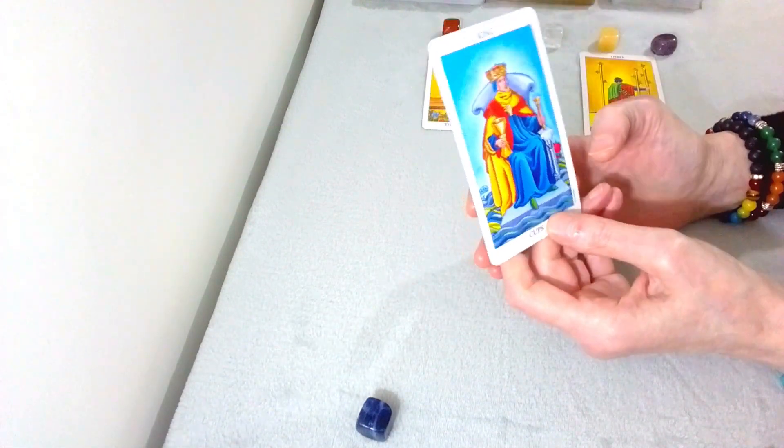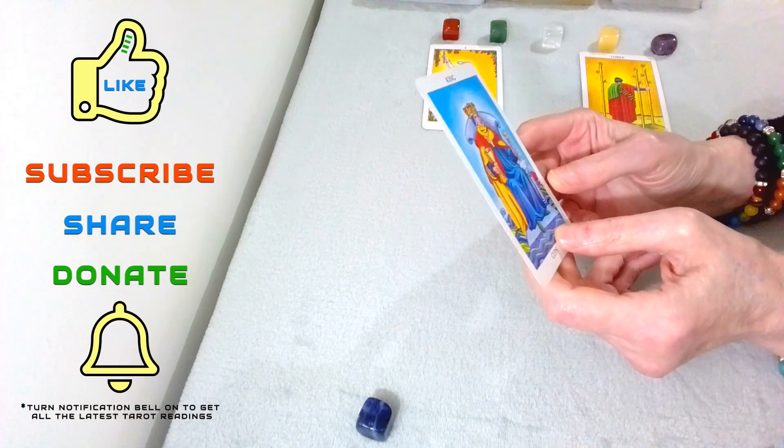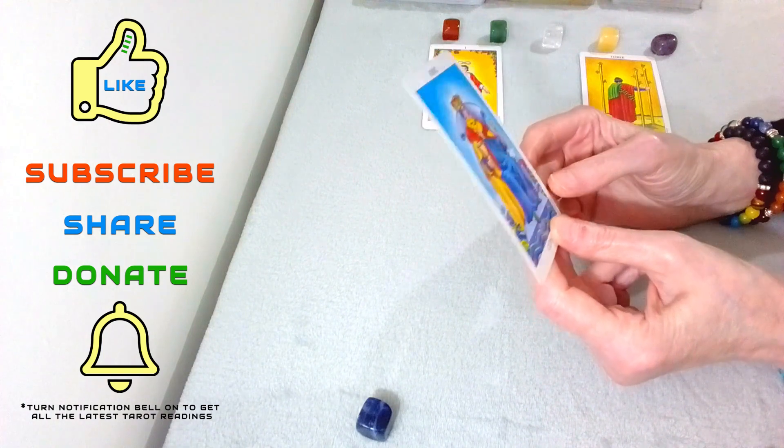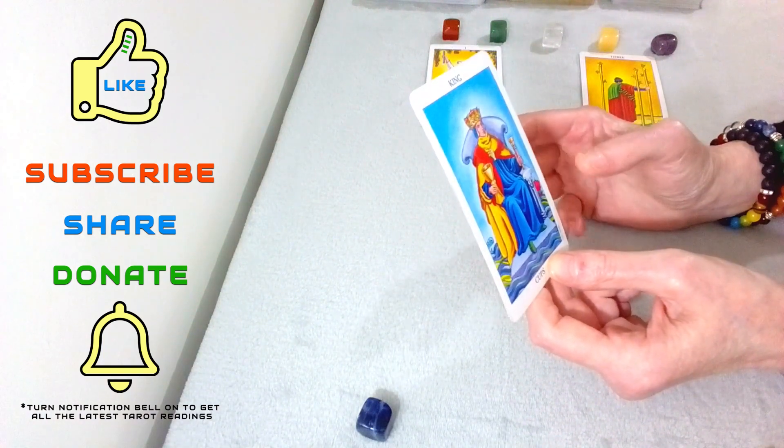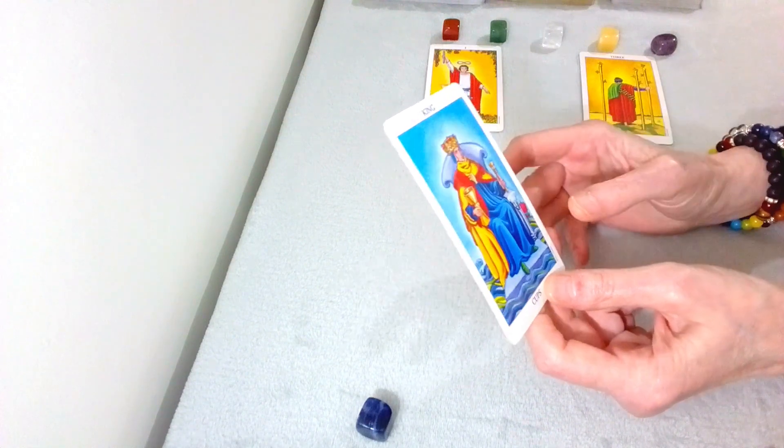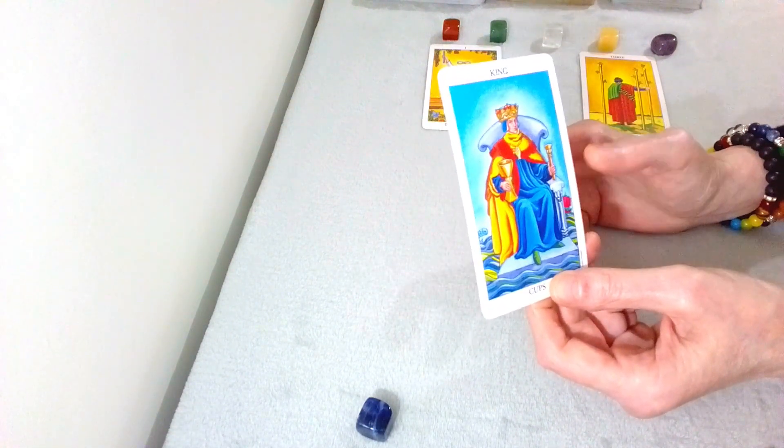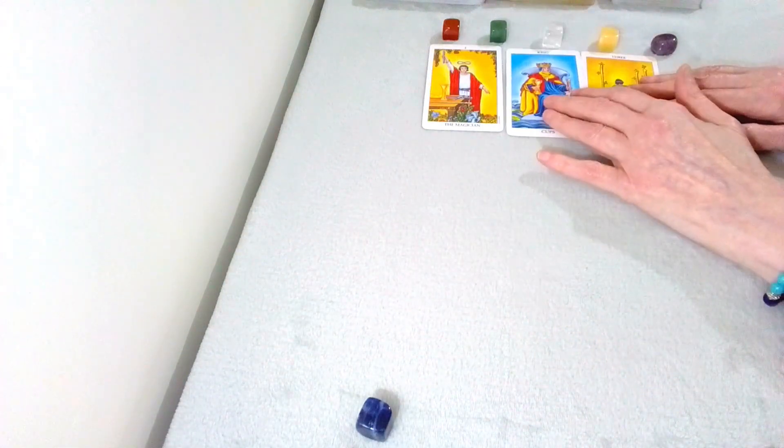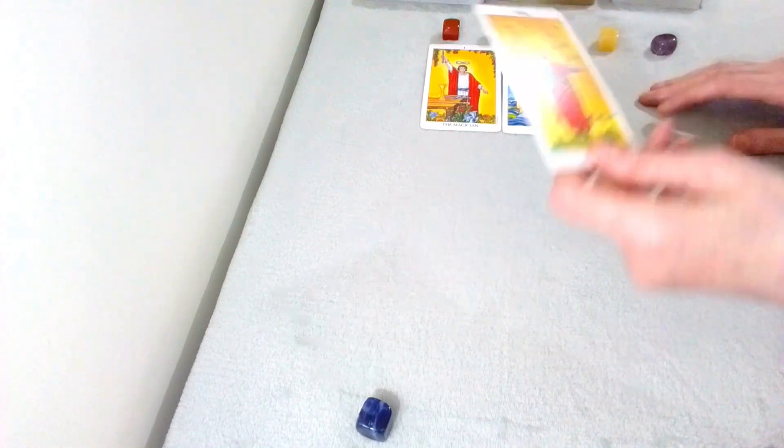Then we have the King of Cups. This is someone who's emotionally balanced, open for love. I feel that you are manifesting new love into your life. I feel that you're ready to have and receive love, to give and receive love here. You're very balanced emotionally. You feel ready. And I think that you are hoping to find new love in your life here.